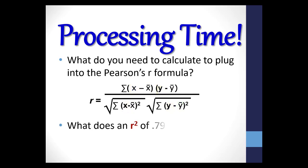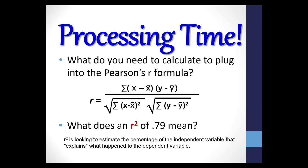What does an r squared of 0.79 mean? Remember that r is looking to estimate the percentage of the independent variable that explains what happened to the dependent variable in a linear model. An r squared of 0, or 0%, indicates that the model explains none of the variability of the response data around its mean. While an r squared of 1, 100%, means that the model explains all of the variability of the response data around its mean. So, an r squared of 0.79 means that about 79% of the variation can be explained, which is a pretty high percentage.